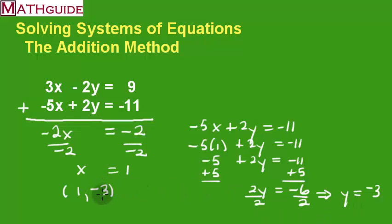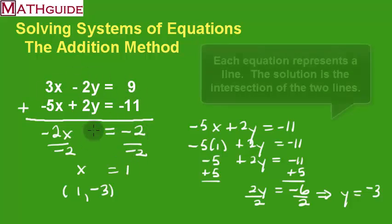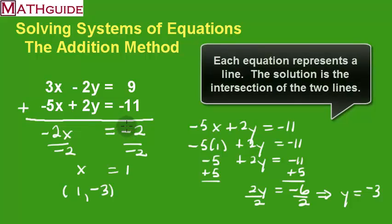Okay, so y is equal to negative 3. So what does this point represent? Well, you have to know a little something about the problem. These two equations both represent lines. So I've got one line, I've got another line, and it turns out that these two lines intersect, and they intersect at this particular point on the coordinate plane.